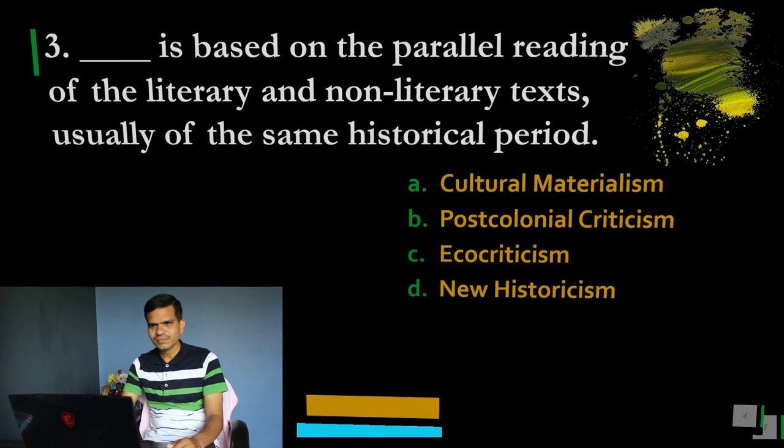If you look at these different theories, you will find how they have developed right from the 1960s onward — some theories in the 1960s, 1970s, and now in the 1980s we have new historicism, beginning with this text by Stephen Greenblatt.